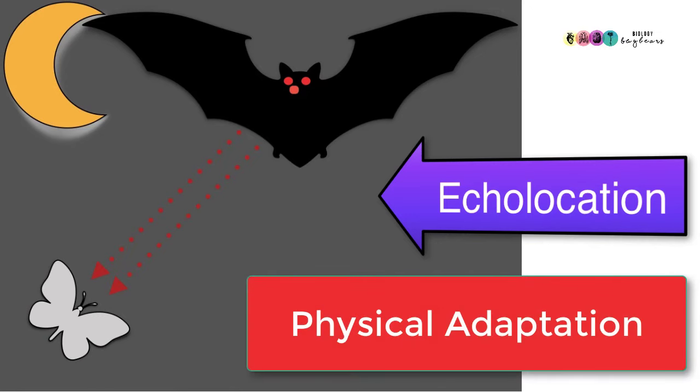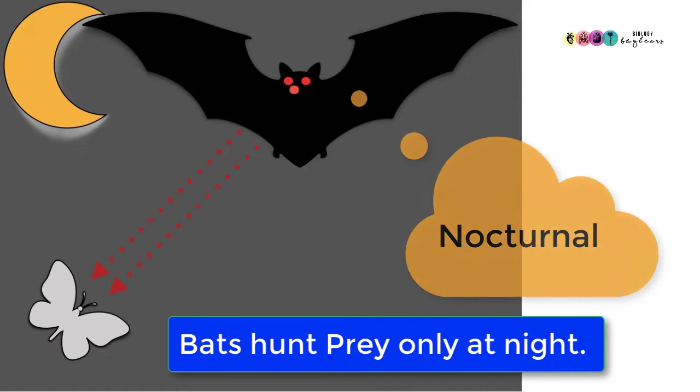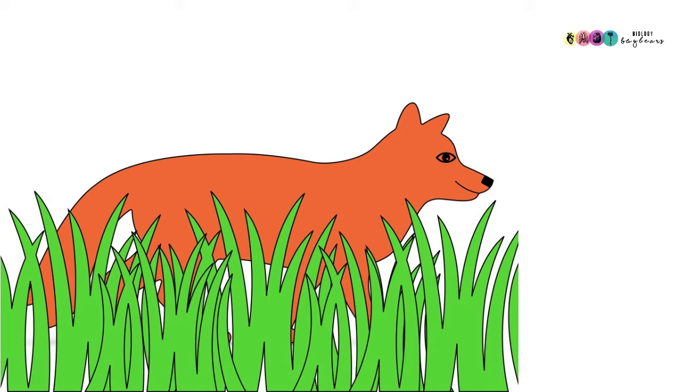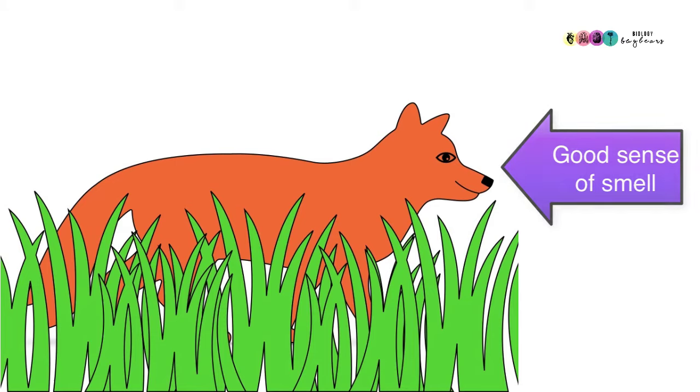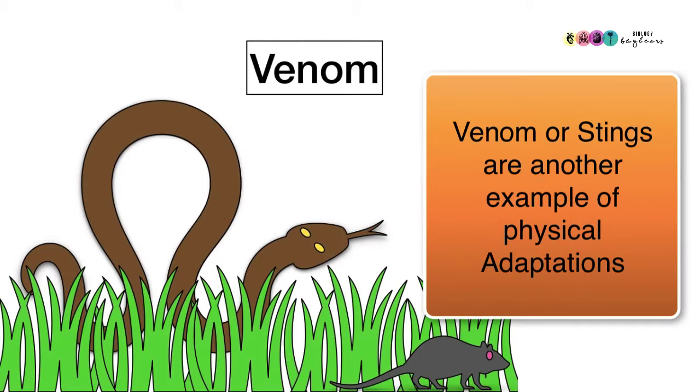This is an example of a physical adaptation. Bats hunt at night and so this is a behavioural adaptation. Some predators have excellent eyesight, they also have an excellent sense of smell to detect prey and the ability to run very quickly. Many predators use venom or stings to catch and kill their prey. For example, snakes will inject venom into their prey by biting them with these sharp fangs.